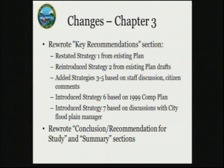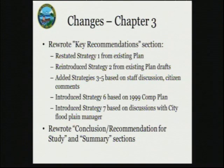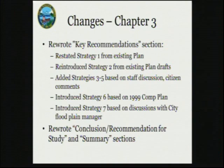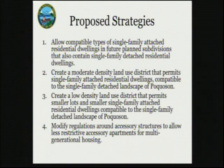From those issues, we have a new key recommendations section with a total of seven possible preliminary strategies. Strategy one is from our existing comprehensive plan. Strategy two was present in older drafts of the current plan but was removed in the final version approved by city council. Strategies three through five are based on staff discussion and citizen comments and are all new. Strategy six is based on the 1999 comp plan, and strategy seven was based on discussions with the city floodplain manager. I've rewritten the conclusion and recommendations for study and summary sections to reflect these recommendations.